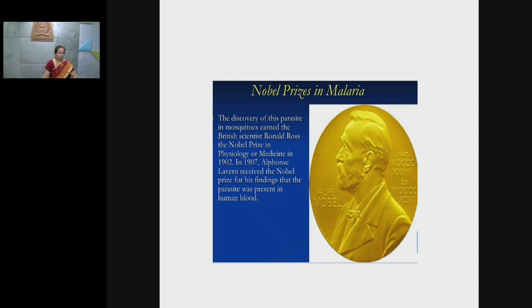The discovery of the malaria parasite in mosquitoes earned British scientist Ronald Ross the Nobel Prize in Physiology or Medicine in 1902. In 1907, Alphonse Laveran won the Nobel Prize for finding that the parasite was present in human blood.